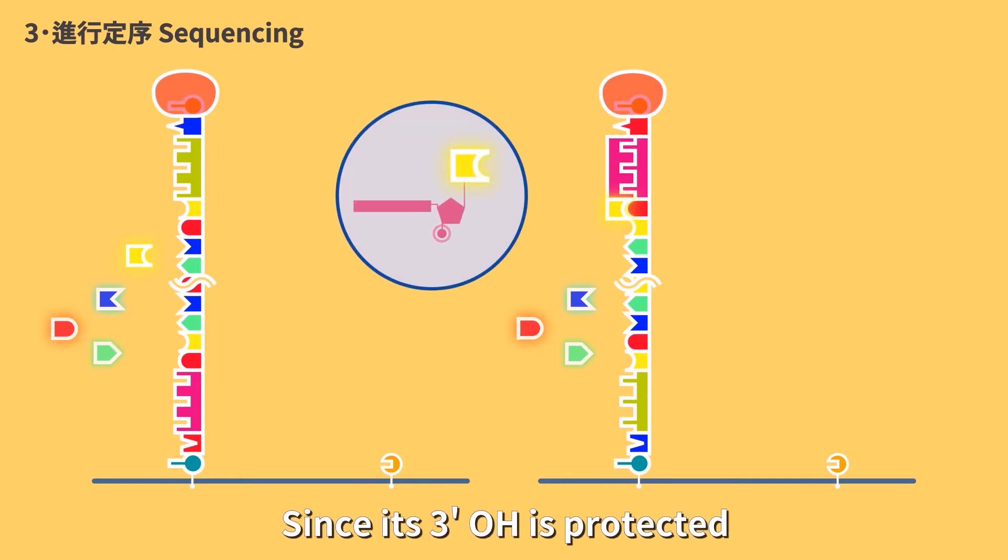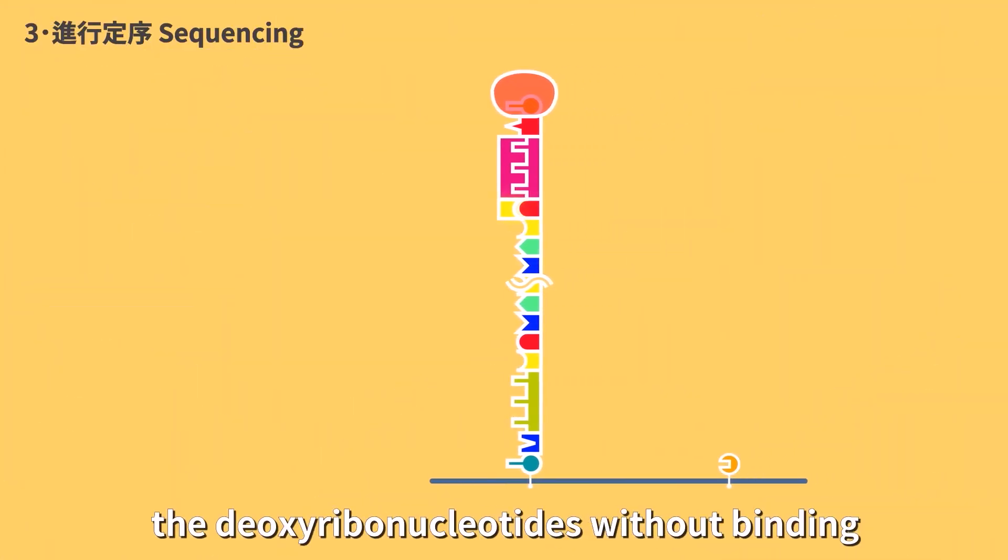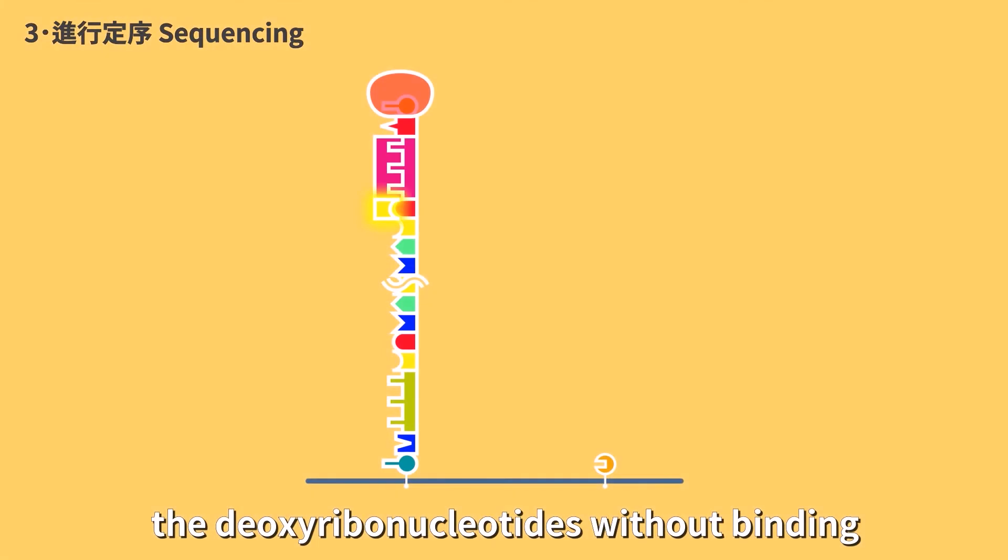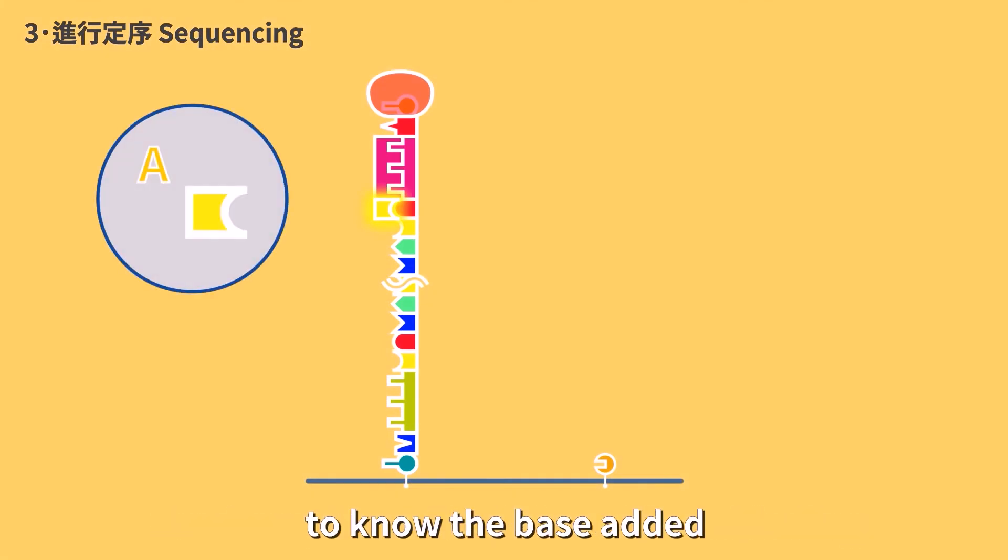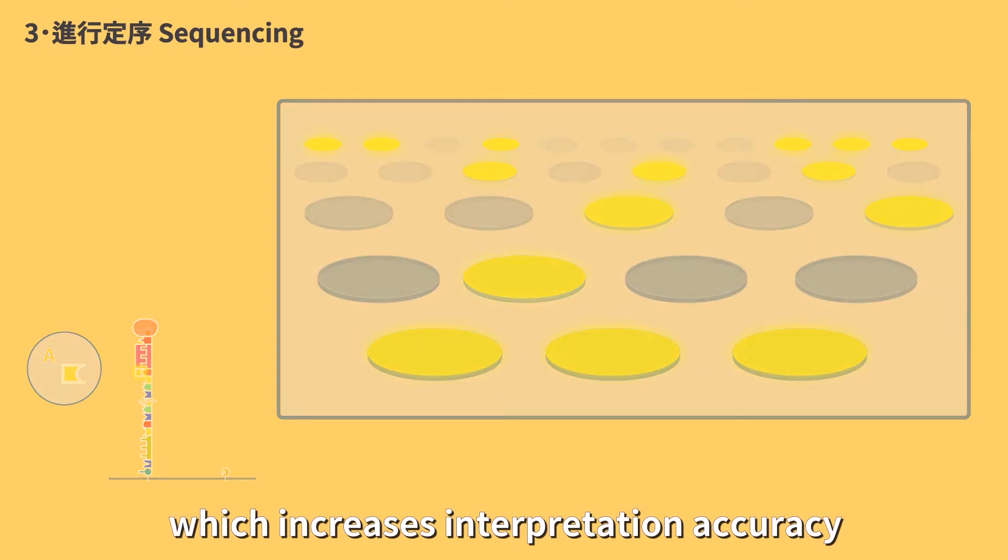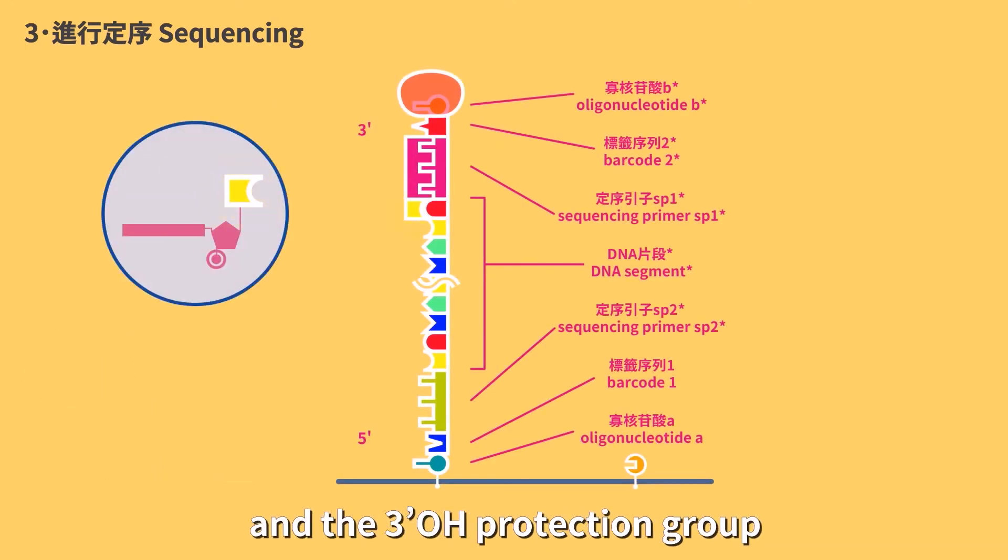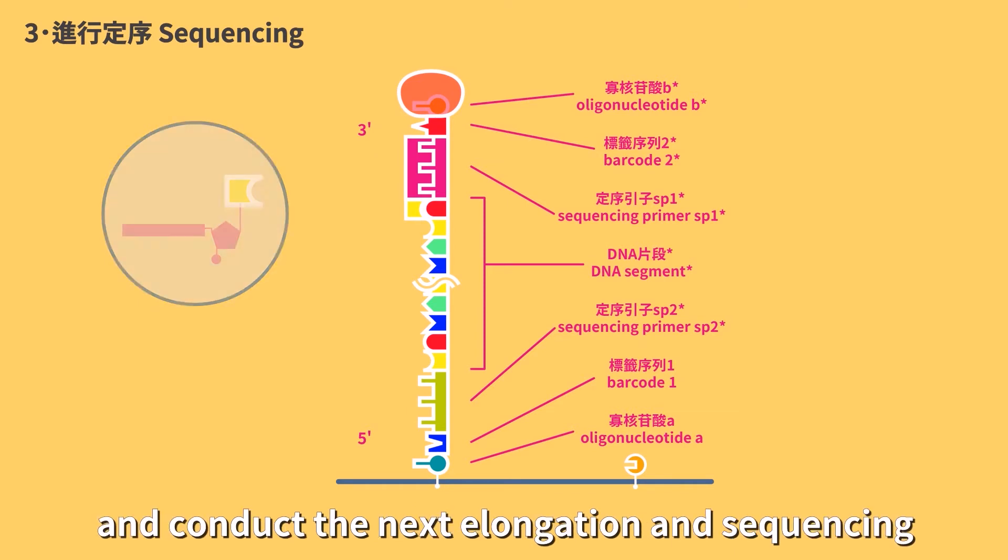Since its three prime OH is protected, it will not continue to extend. After washing away the deoxyribonucleosides without binding, detect four fluorescence to know the base added. Clusters with identical sequences will show identical and apparent fluorescent signals, which increases interpretation accuracy. After detection, excise the fluorescent group and the three prime OH protection group, and conduct the next elongation and sequencing.